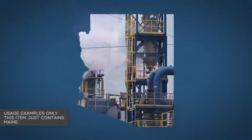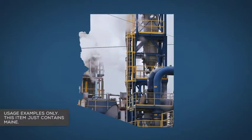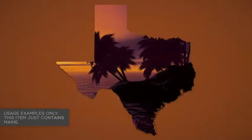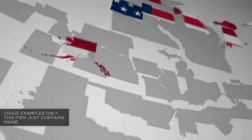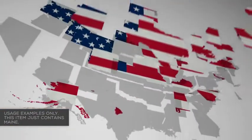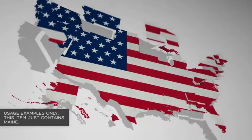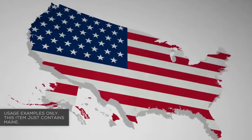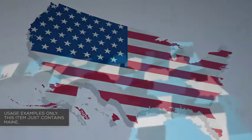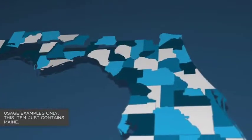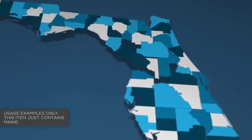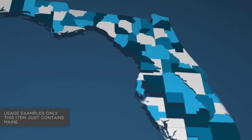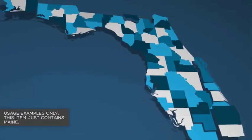Use your own content as a texture for the state — images, footage, whatever you need. Highlight counties with different colors to match your branding and to represent whatever you need the map to represent. Or get creative and add your own animations and images into the texture layers.